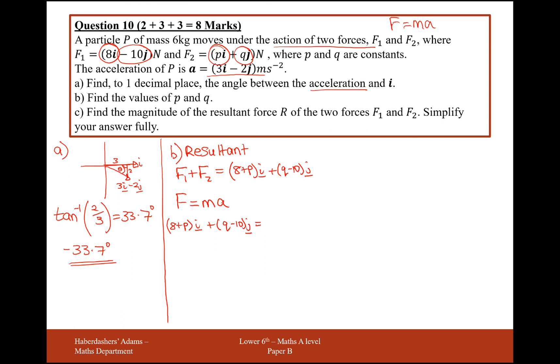now I'm looking on the right-hand side of this formula here, mass of 6 times A, which is our acceleration vector, 3I minus 2J.